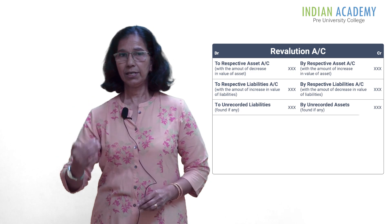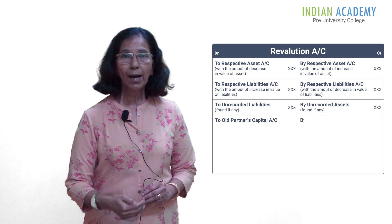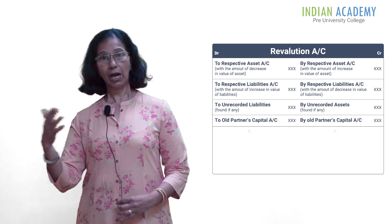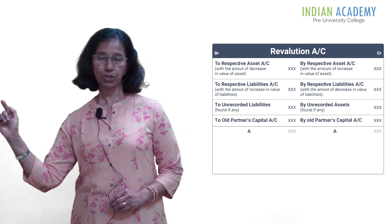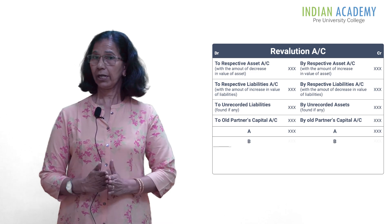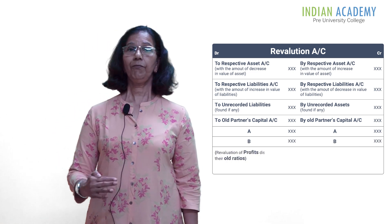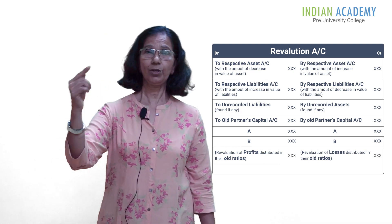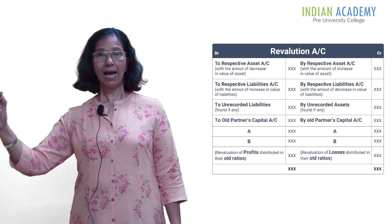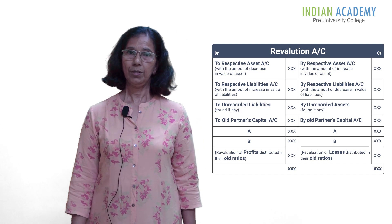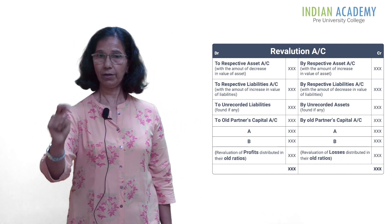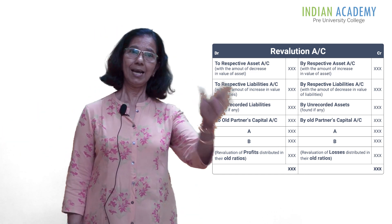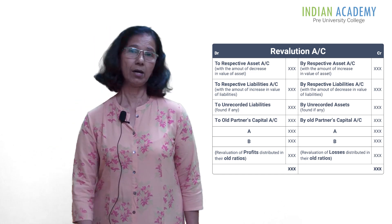If there is any increase or decrease in the value of assets, or decrease or increase in the value of liabilities, or there are certain assets or liabilities which are unrecorded, these are brought into account in the revaluation account. Since revaluation is a nominal account: if there is an increase in the value of assets, it is a gain — so the concerned asset account is credited to the revaluation account. If there is a decrease in the value of any asset, it is a loss — the concerned asset is debited to the revaluation account.